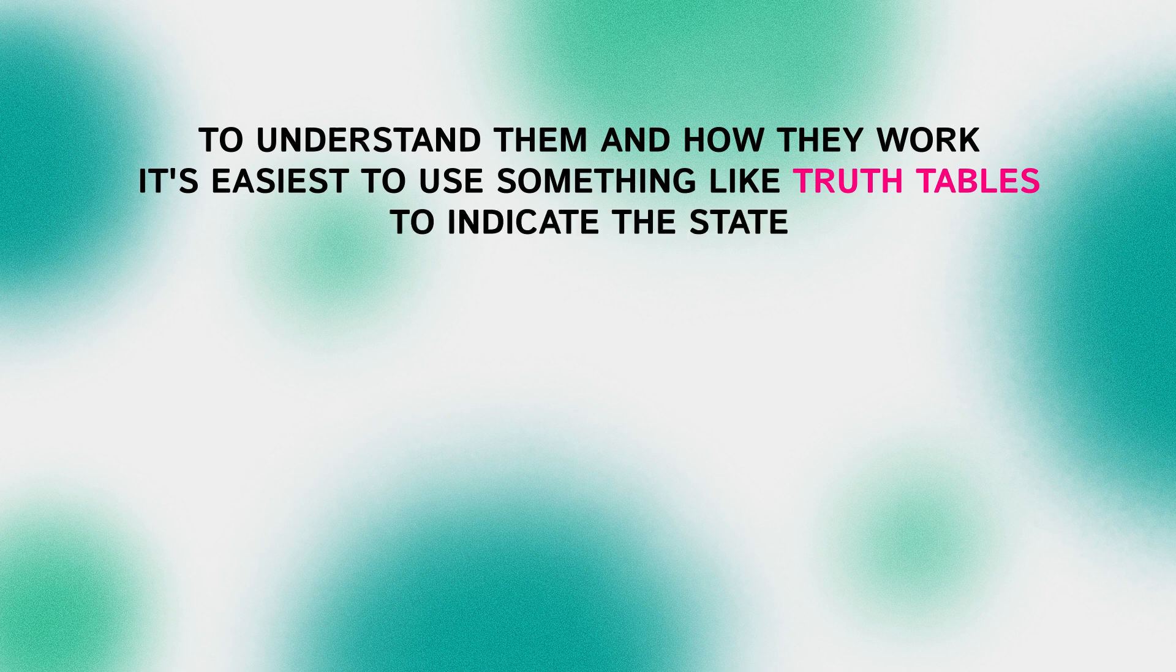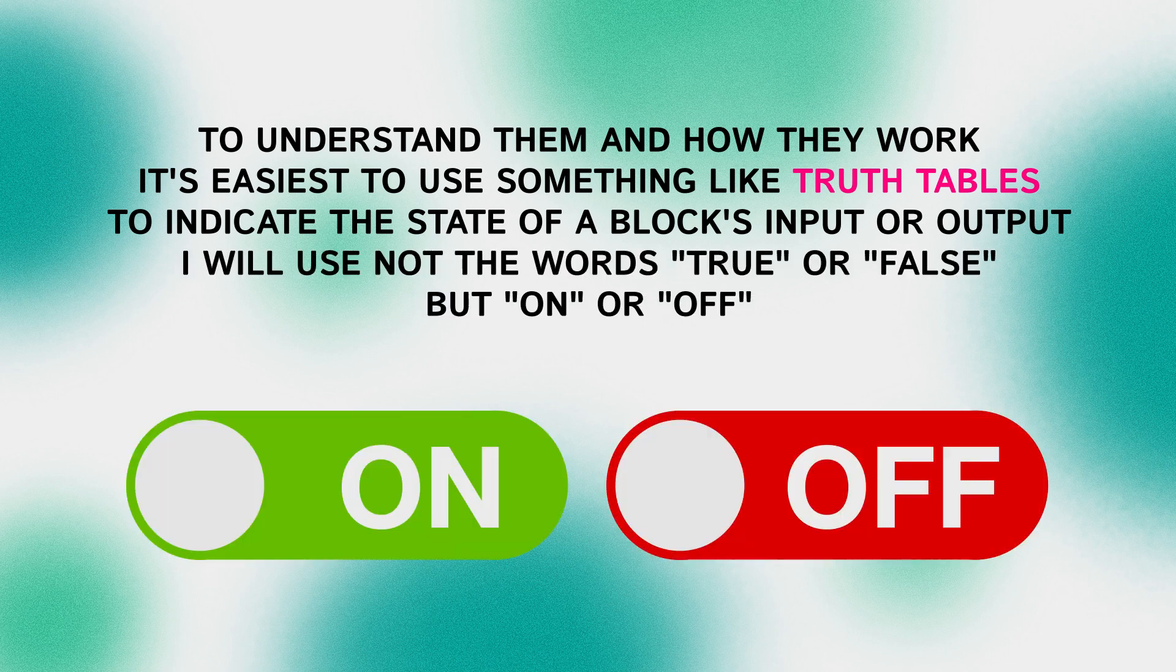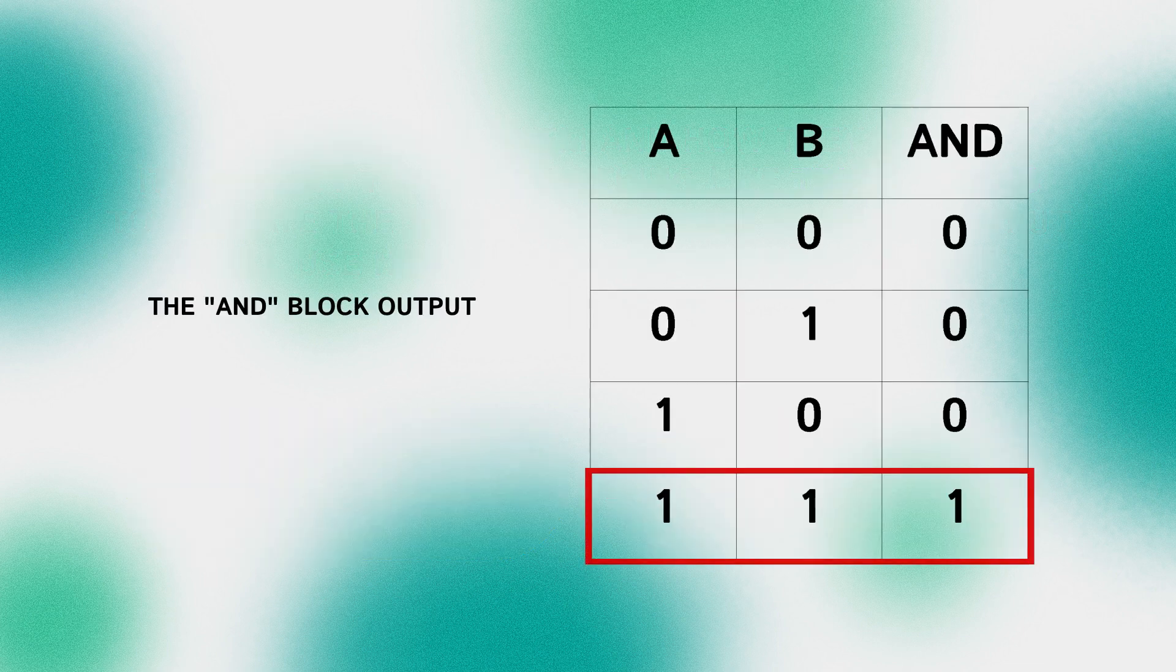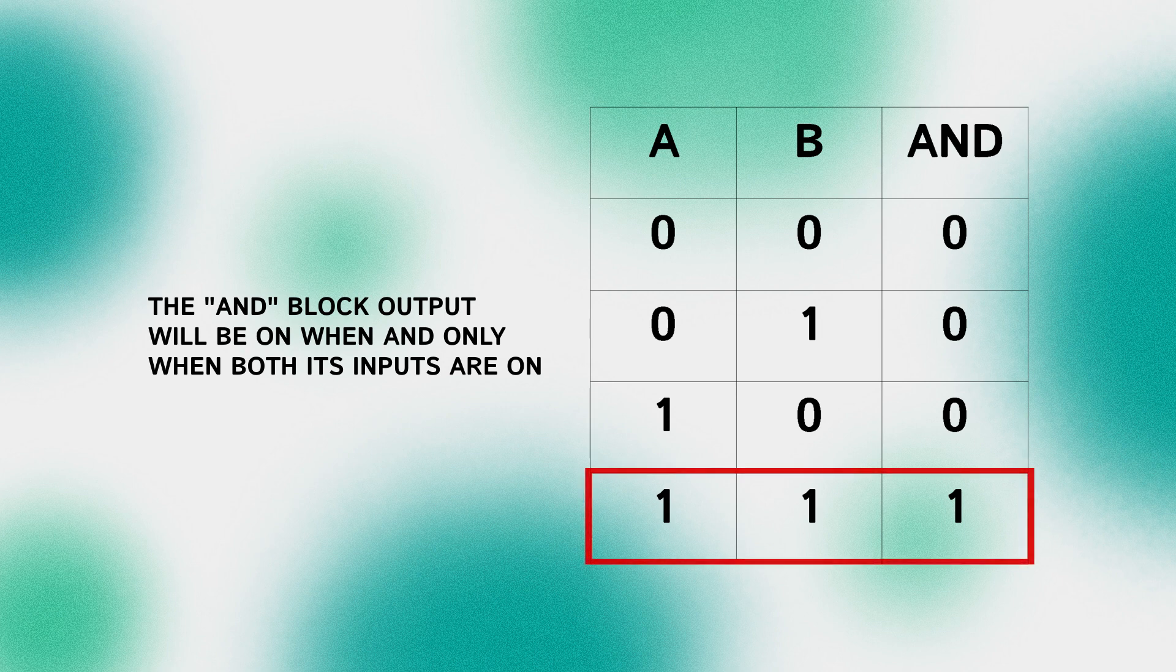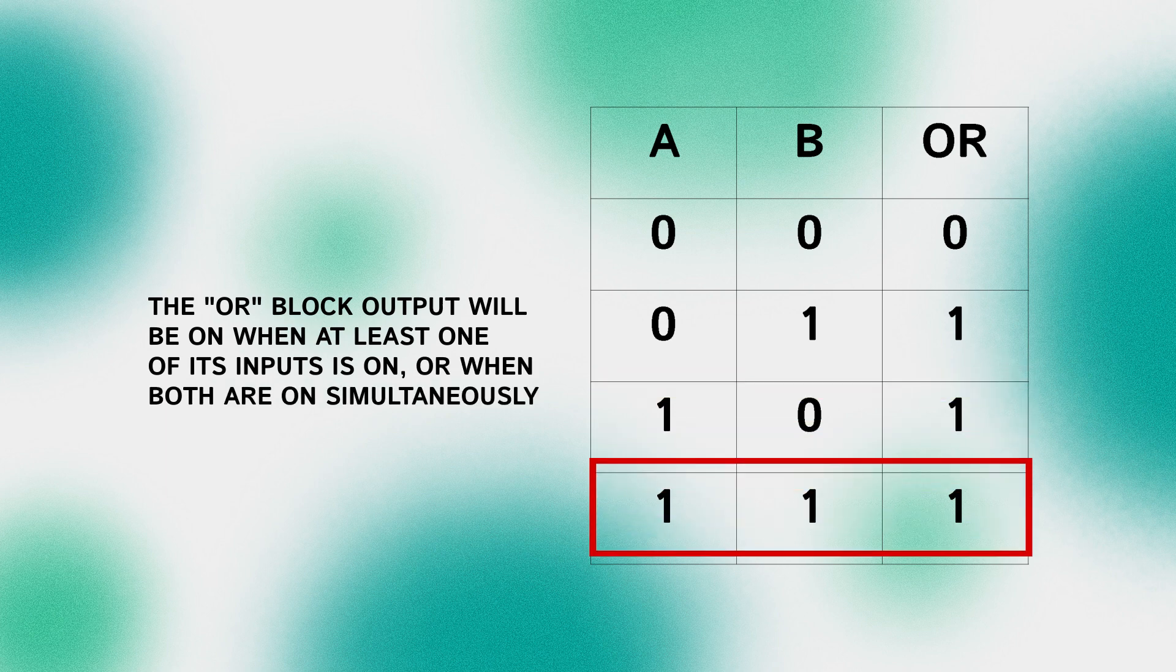To indicate the state of a block's input or output I will use not the words TRUE or FALSE but ON or OFF. The AND block output will be ON when and only when both its inputs are ON. The OR block output will be ON when at least one of its inputs is ON or when both are ON simultaneously.